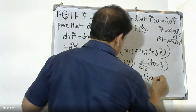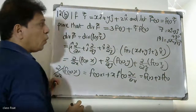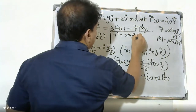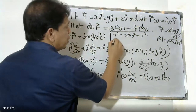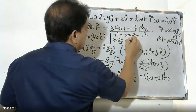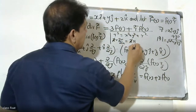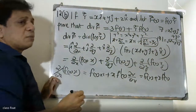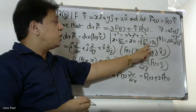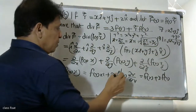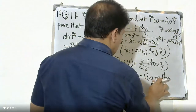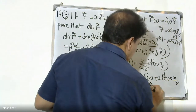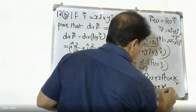This becomes f(r) plus x into f dash r into dou r by dou x. Now, since r equals square root of x squared plus y squared plus z squared, we compute dou r by dou x, which gives x by r. So the first term is f(r) plus x squared by r times f dash r.